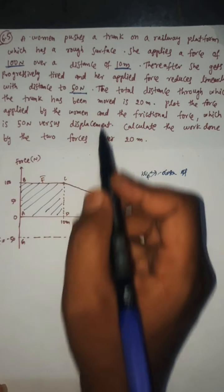The work done by the woman — WF — is found as follows: up to 10 meters she applied 100 Newtons, and after 10 meters she applied 50 Newtons linearly decreasing. We have to find this area plus this area. A, B, C, D is a rectangle, and C, E, I, D is a trapezium.